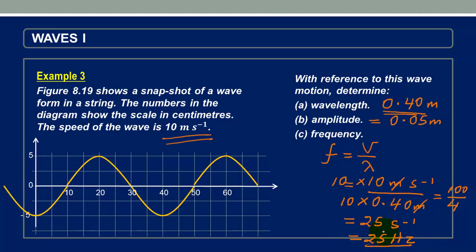So remember, per second is the other unit for frequency, because it is the number of oscillations per second, or number of cycles per second, number of vibrations per second, and so forth. But the best unit to use here will be hertz. So the frequency is 25 hertz.